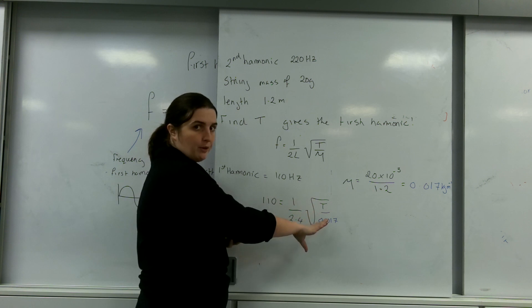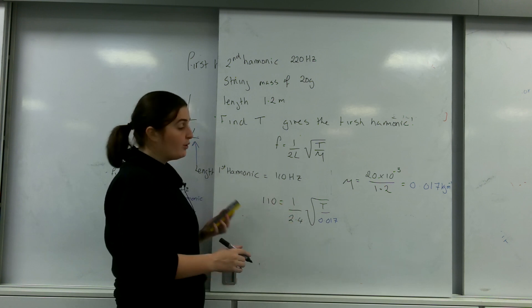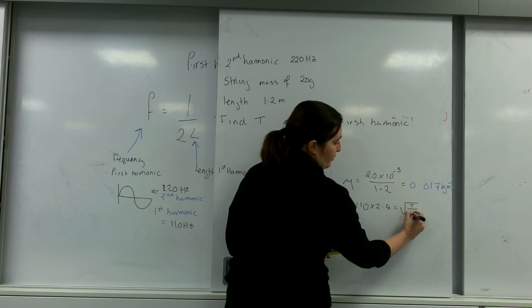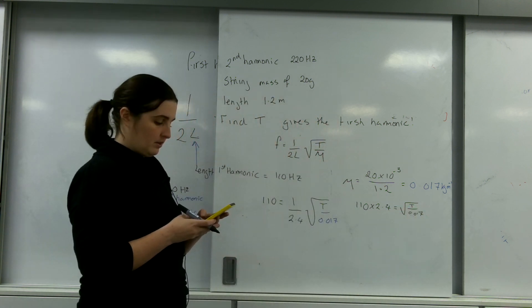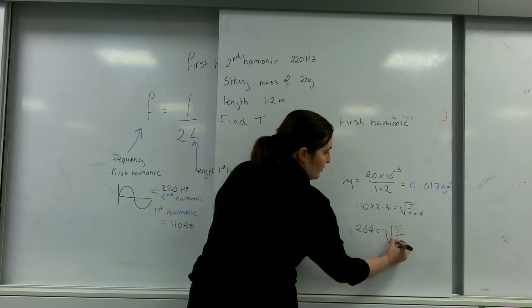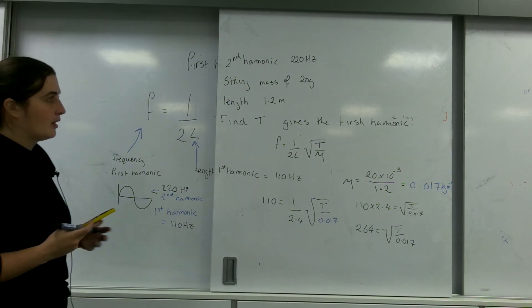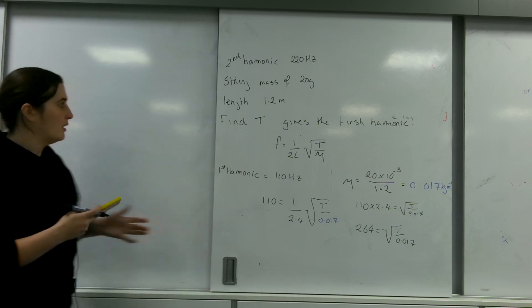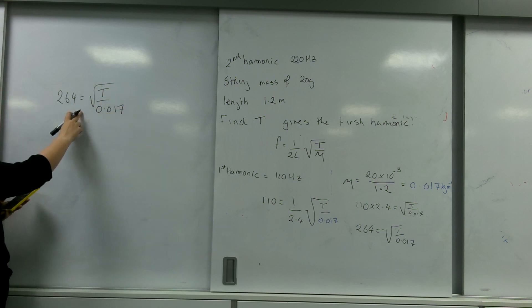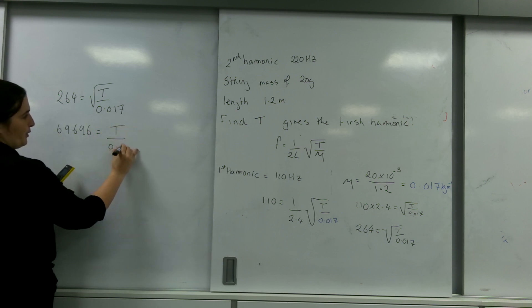When you're dealing with square roots, always leave that part to last. I'll get rid of all the stuff at the front first. I multiply both sides by 2.4, so 110 times 2.4 equals the square root of T over 0.017. That gives 264 equals the square root of T over 0.017. To get rid of the square root, you square both sides: 69,696 equals T over 0.017.